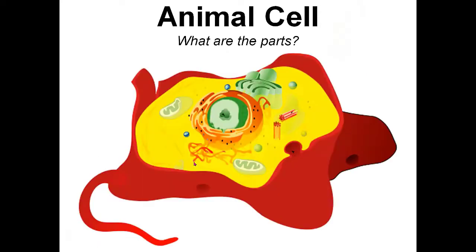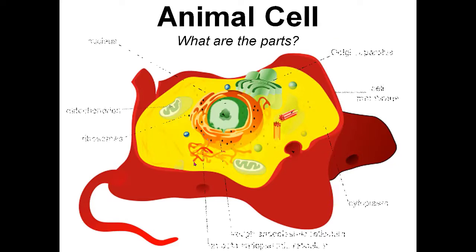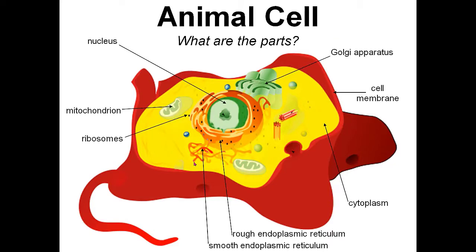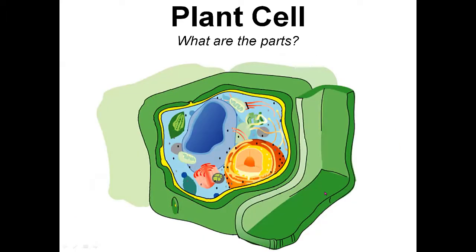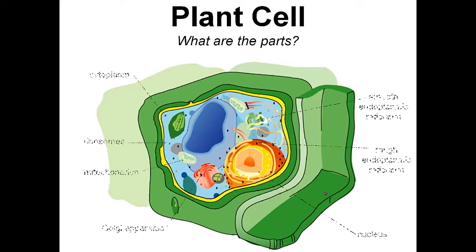We studied the structure of the animal cell, and the parts of animal cells were taught — like the nucleus, mitochondria, ribosome, and others. Later on, we proceeded with the plant cell and its structure: how a plant cell appears and what the different parts of the plant cell are.